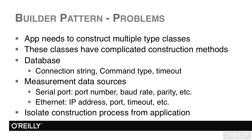For example, if working with a database, we may need to build up a connection string, a command type, a command object, and then set timeout properties. For measurement data sources, we might have a serial port — which has port number, baud rate, parity, and other properties — or an Ethernet connection with an IP address, port, and timeout. For a business object like an order, we'd have customer and order date properties, plus order details with multiple items, each needing to be constructed.